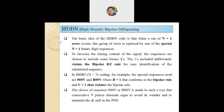We are going to use the bipolar RZ concept. This is the main important thing we need to concentrate on. From the previous session we know how to design a bipolar RZ signal. Now in HDB-N we are going to discuss about the case where n equals 3, so the signaling will be called HDB3 coding.